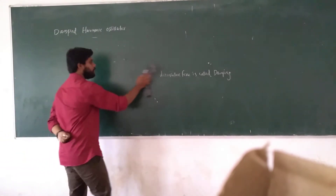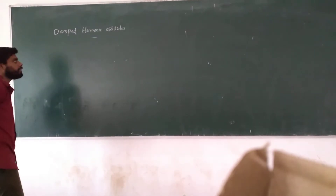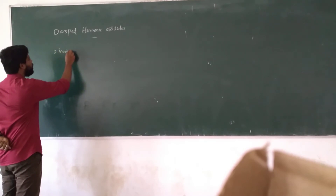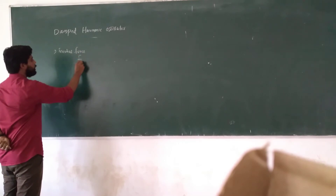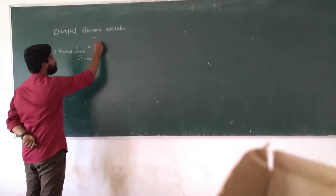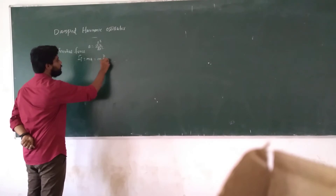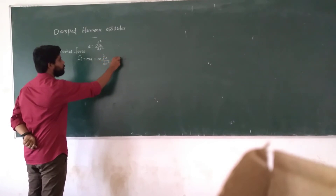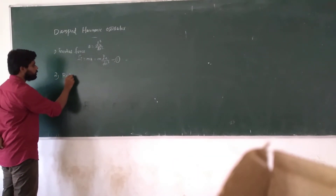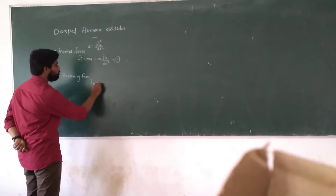This is the differential equation. The solution will be solved. We will see the first force. The force is Fy — this is the acceleration of the force, the second derivative of displacement. The first force is the restoring force. Restoring force: alpha is equal to delta minus Cx, where C is called the force constant.